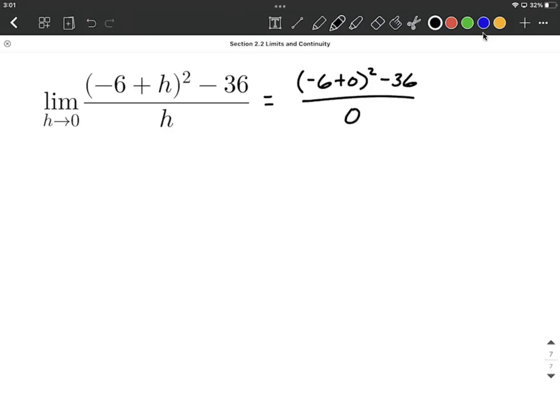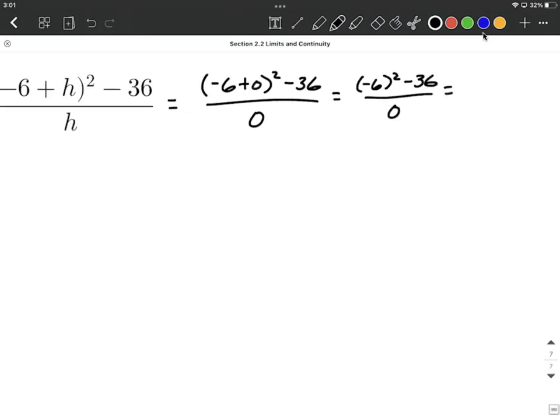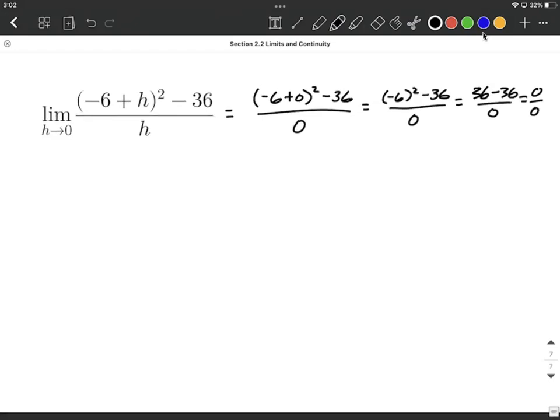Do a little bit of reducing down, and I think we're going to get negative 6 squared minus 36 over 0. Or 36 minus 36 over 0 works out to be 0 over 0, which is the indeterminate case.